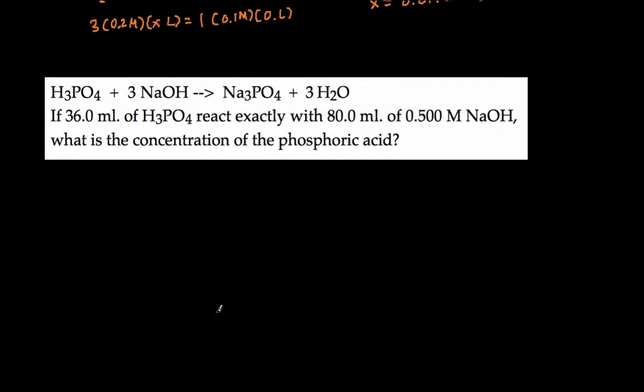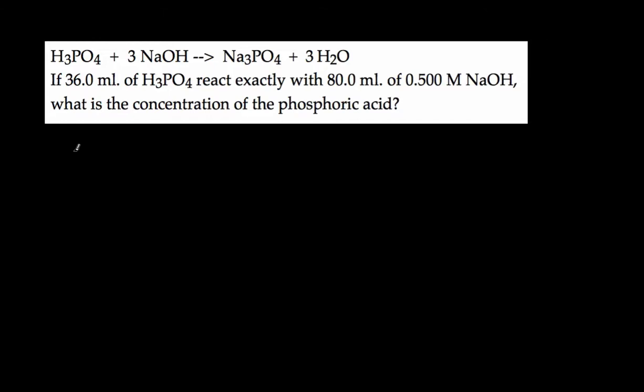So this problem, it's the exact same reaction, and let's just do the same thing. We're going to first write out the reaction again. And then let's write the numbers down. So it says 36 milliliters of H3PO4. I'm going to turn that into liters, so divide that by 1000, that's going to give us 0.036 liters.